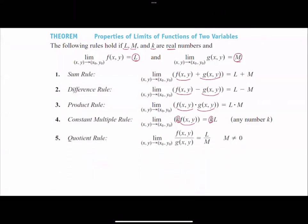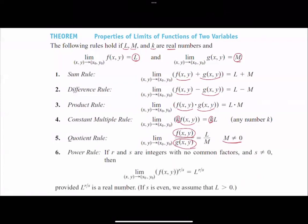Quotient rule: if you have the division of two functions, the limit of their quotient is the division of their limits — note that the denominator cannot equal zero. Finally, the power rule: if you have f raised to the power r/s, where s is not zero, you can move the limit inside the parentheses, find the limit of the function, and raise it to the power r/s. These properties, which you saw for elementary functions, can be generalized to multivariable functions.